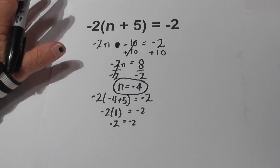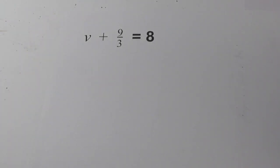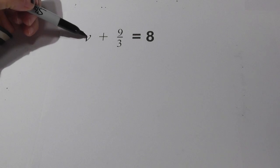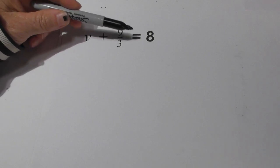Now let's work on our next one. With this two-step equation we have the variable. We have v + 9/3 = 8.